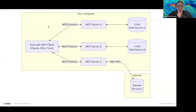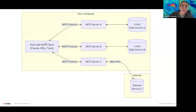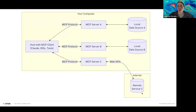This diagram is right out of the MCP docs. You can see the host connecting via protocols to servers. Each of these servers provides tool functionality — maybe it's your RAG system — connecting to either a local data source or calling something externally via APIs. These are just standard ways to connect to these sources.